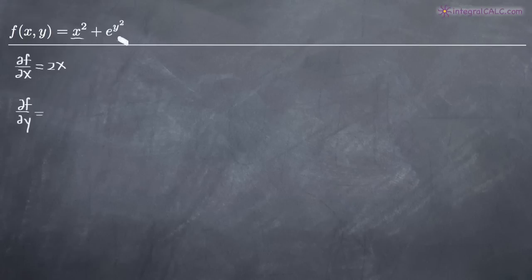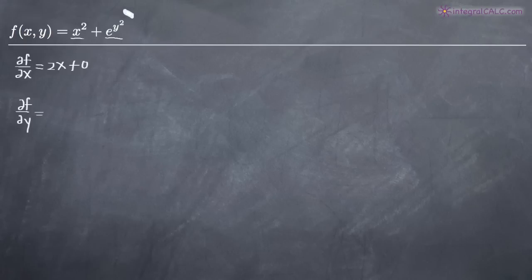With respect to e to the y squared, there's no x variable involved in that term — we're treating y as a constant. So e to the y squared just becomes zero, because there's no x variable involved there. This is no different than saying plus 4; we treat y as a constant, it's a constant number, so there's no derivative there.